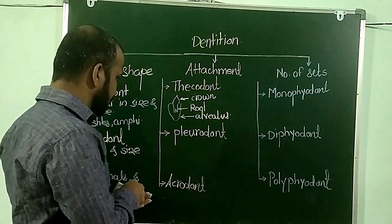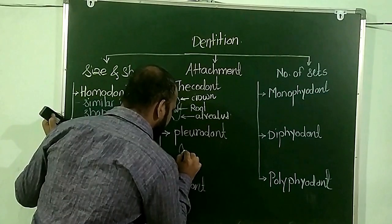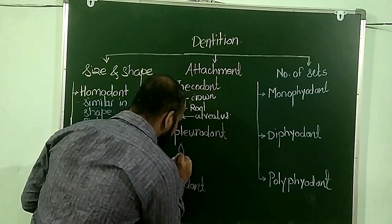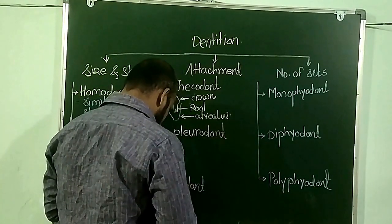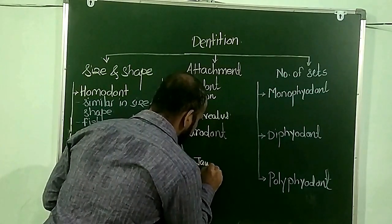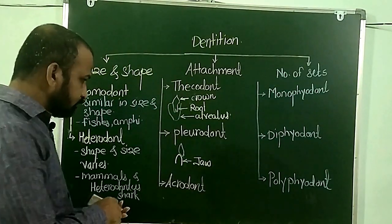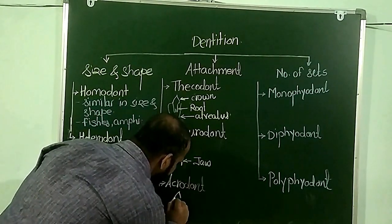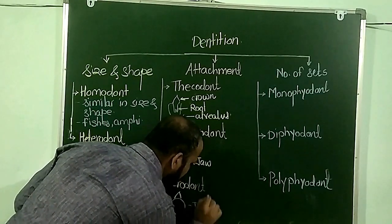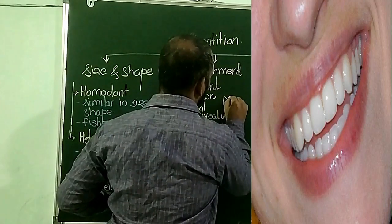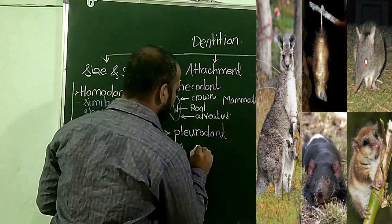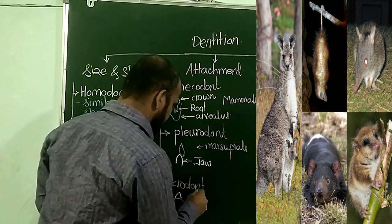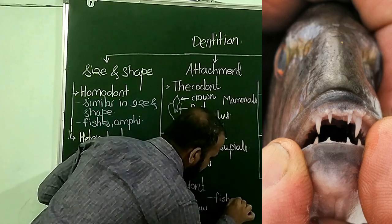In case of the Pleurodont condition, the teeth are attached only on the upper and inner side of the jaws. In case of the Acrodont condition, the teeth are present just on the upper surface of the jaws. The Thecodont condition is present in mammals, the Pleurodont condition is present in marsupials, while the Acrodont condition is present in fishes and amphibians.